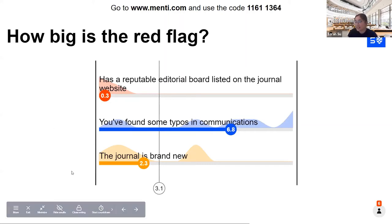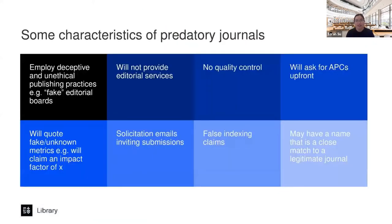It's usually a variety of practices that make a journal predatory, not necessarily just one or two things. There isn't a particular threshold of characteristics that tips a journal into predatory territory. You have to look at the journal's practices as a whole and decide whether that publication will serve you well and put your research in the best light, or whether publishing there will do more harm than good.